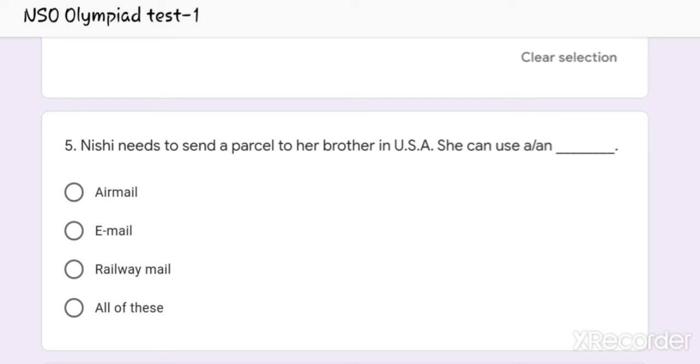Question number 5. Nishi needs to send a parcel to her brother in USA. She can use a dash. Option 1: Air mail. Option 2: Email. Option 3: Railway mail. And option 4: All of these. And the correct answer is Option 1, Air mail.